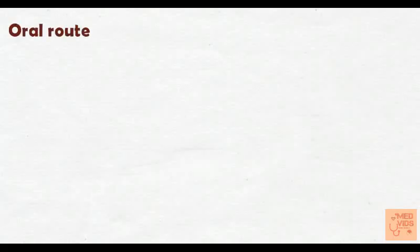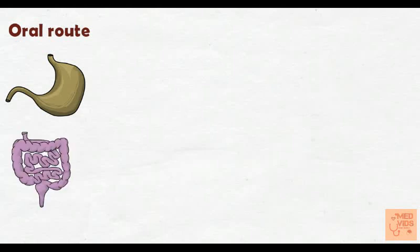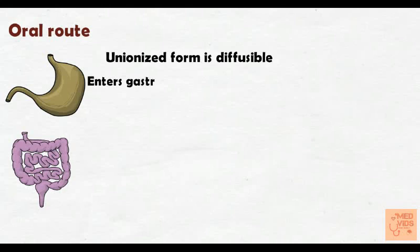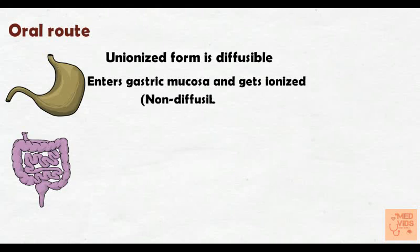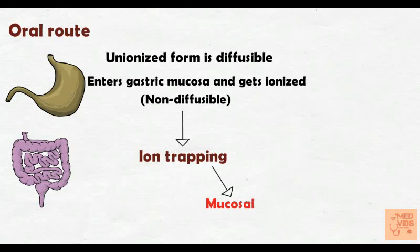Aspirin is usually given by the oral route. It is absorbed from the gastric mucosa as well as intestinal mucosa. Aspirin is absorbed only in the unionized form, in which it is diffusible. When aspirin enters the gastric mucosal cells, it can get converted into the ionized form, where it becomes non-diffusible. It cannot leave the gastric mucosal cell and so gets trapped inside, leading to ion trapping. This increases gastric mucosal damage.